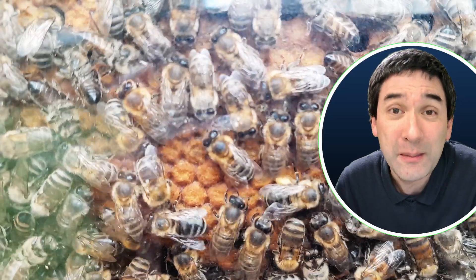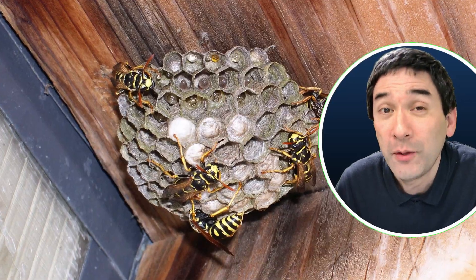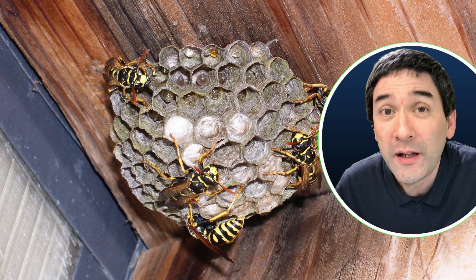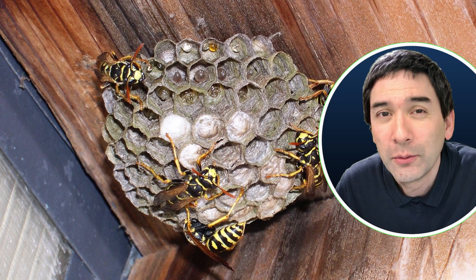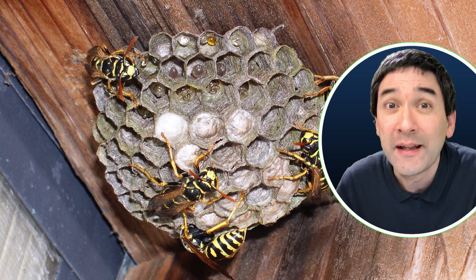A wasp, however, is able to sting you multiple times. When we put the stinger of a bee and a wasp under the microscope, you're able to see that there's a difference in the anatomy of the stinger.